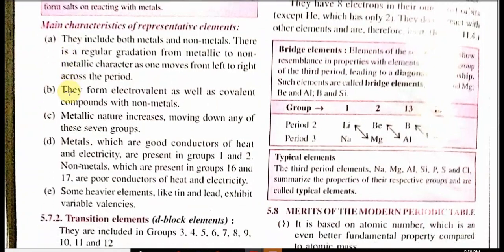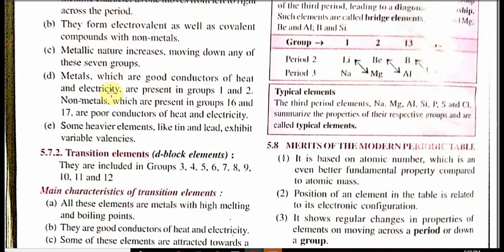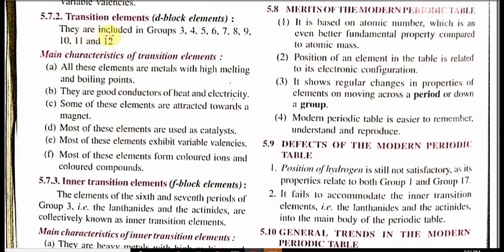Main characteristics of representative elements: they include both metals and non-metals; there is a regular gradation from metallic to non-metallic character as we go from left to right across the period; they form electrovalent as well as covalent compounds with non-metals; metallic character increases moving down any of the seven groups; metals, which are good conductors of heat and electricity, are present in groups 1 and 2; non-metals in groups 16 and 17 are poor conductors of heat and electricity; some heavier elements like tin and lead exhibit variable valency.